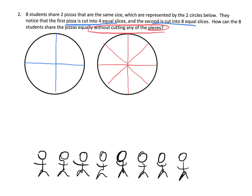Looking at this piece here — I'll highlight it in green — that big piece is equal to these two pieces over on the other pizza. So one big piece, one-fourth, is equal to these two over here. This is an eighth, and this is an eighth. So one-fourth is equal to two-eighths right here.